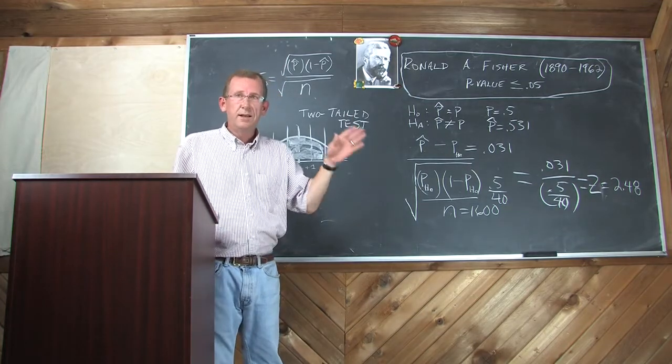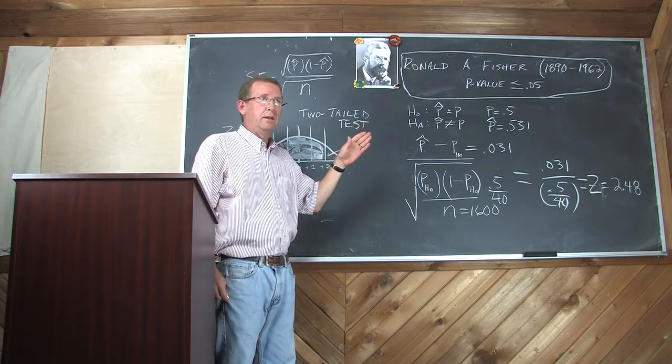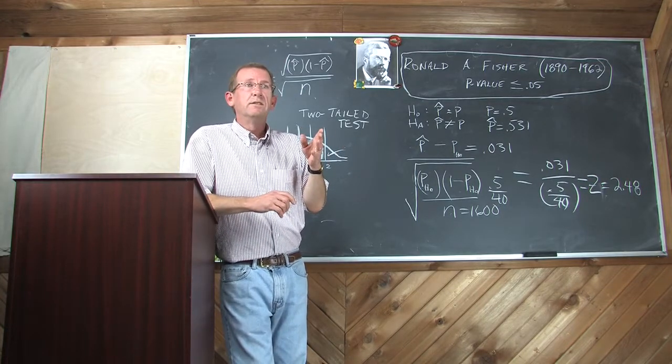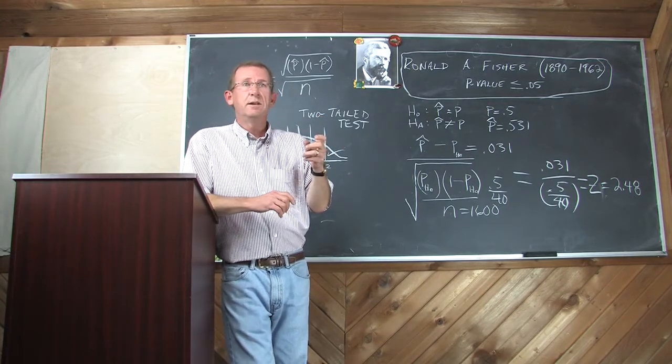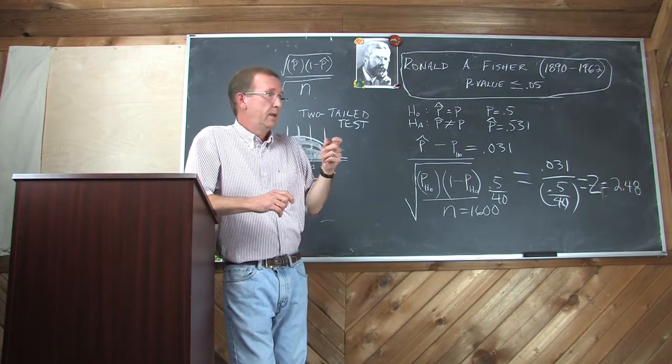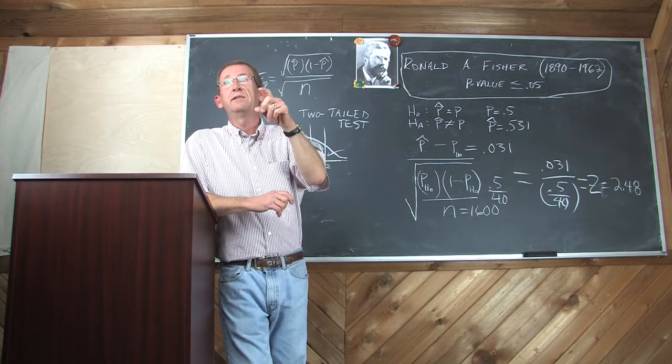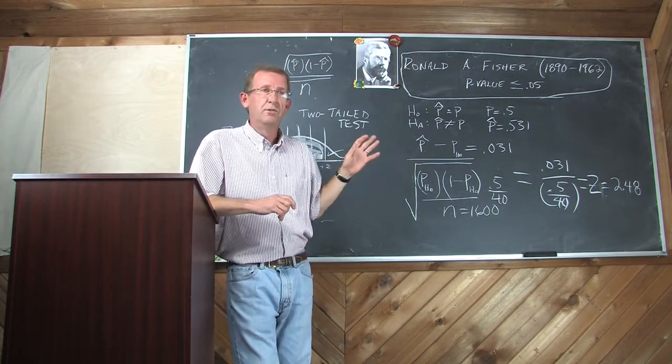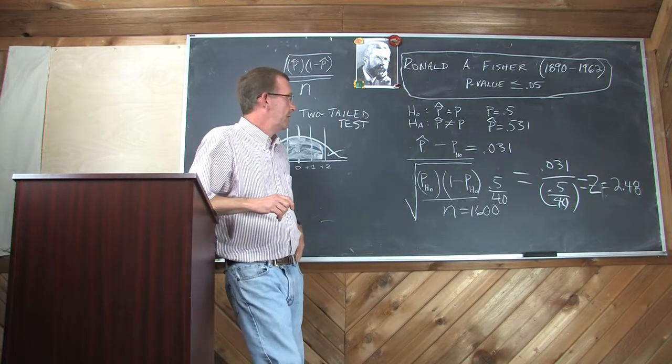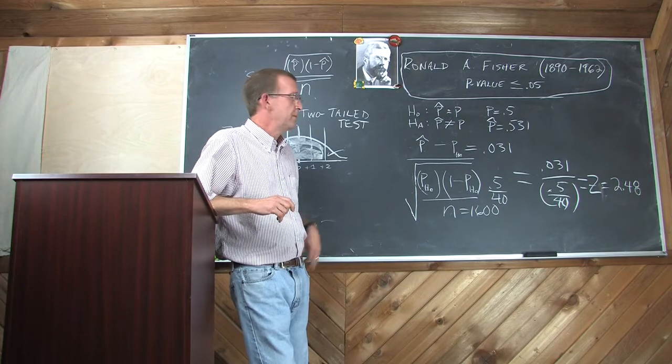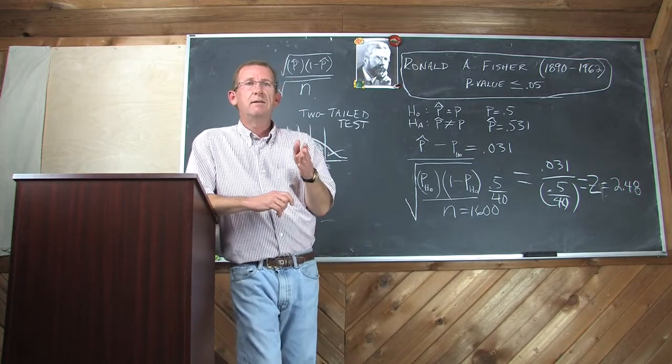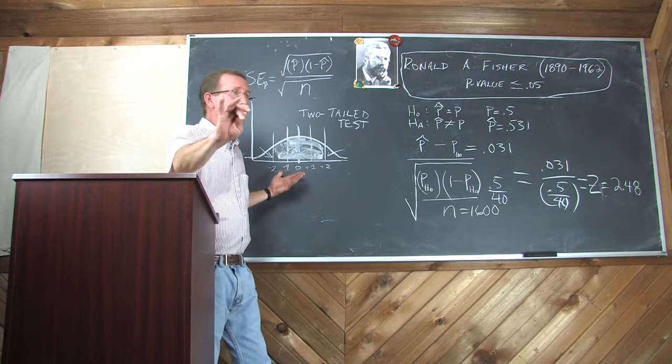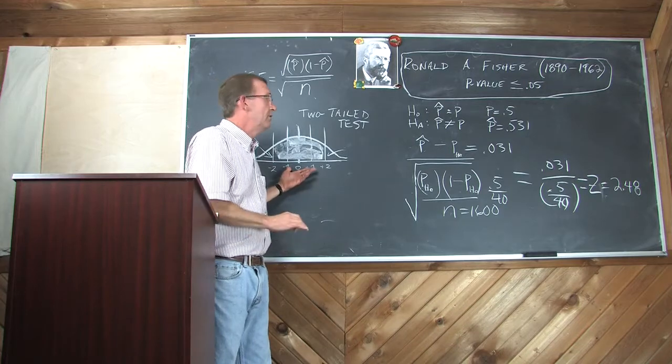For hypotheses, where there is a directional, sort of natural direction to the hypothesis, you would use one tail, which essentially then would take the results you're going to see here and divide by two. So, you'd be looking at all the area over this way or all the area over this way, leaving the p-value to describe, as you'll see, only one of those twos. In this case, we're going to do both.